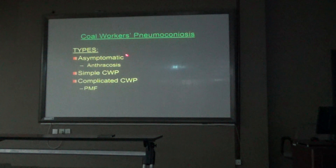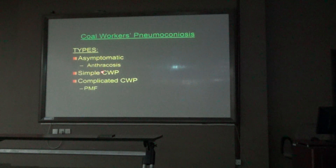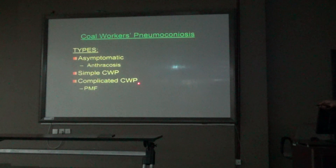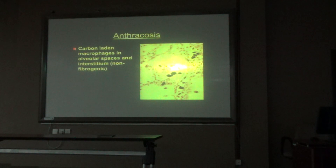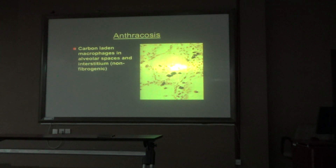In coal worker pneumoconiosis, the patient is initially asymptomatic when working for only a few years. After five to ten years the patient develops anthracosis, then simple coal worker pneumoconiosis, then complicated coal worker pneumoconiosis, and finally pulmonary massive fibrosis. The last stage is always fibrosis, which causes restriction of the lung. Microscopically, carbon particles are seen in alveoli and are engulfed by macrophages — these are called carbon-laden macrophages.